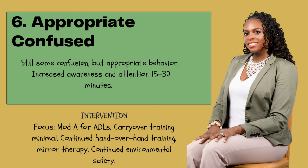Stage six is considered appropriate confused — there's still some confusion, but their behavior is more appropriate. You will see increased awareness and attention span of about 15 to 30 minutes during activities, but there's still going to be a lot of cueing. Your intervention level is going to be more modified assistance for ADLs. This is where you're going to start doing some more carryover training, continue with hand-over-hand training, and you could even try to implement mirror therapy. You still need to take cognition into account and continue with environmental safety, because once somebody's still confused, safety remains a top priority.